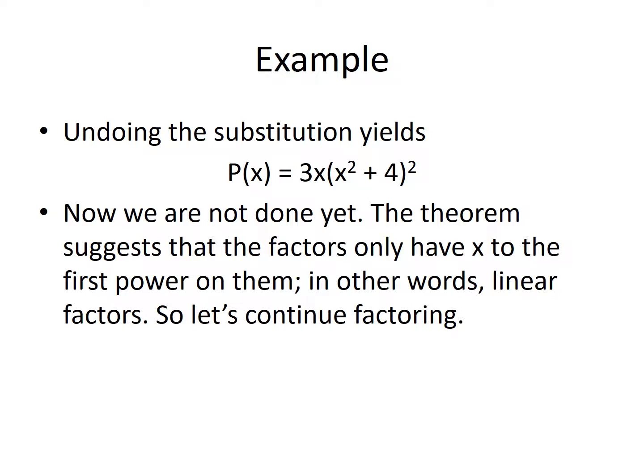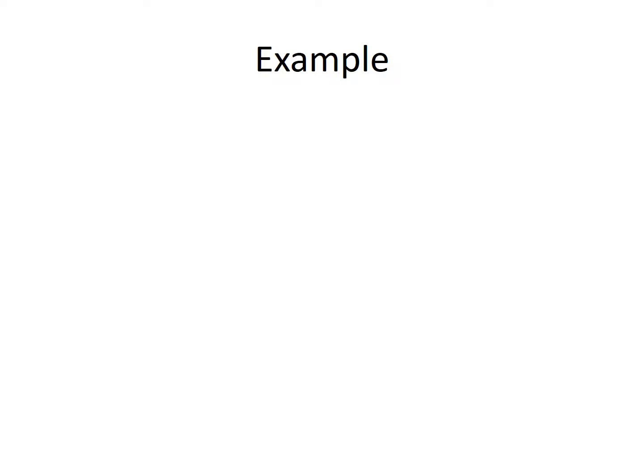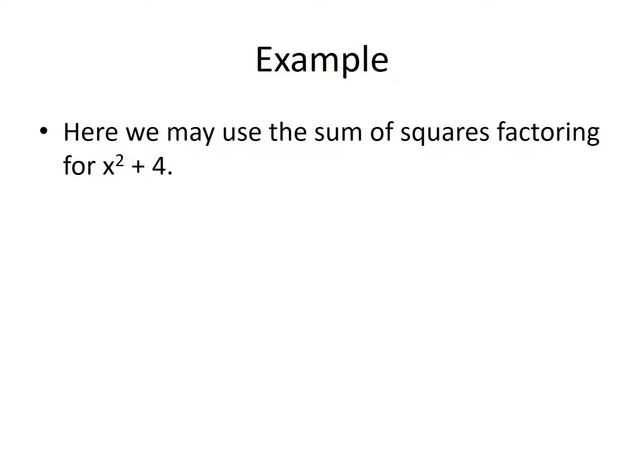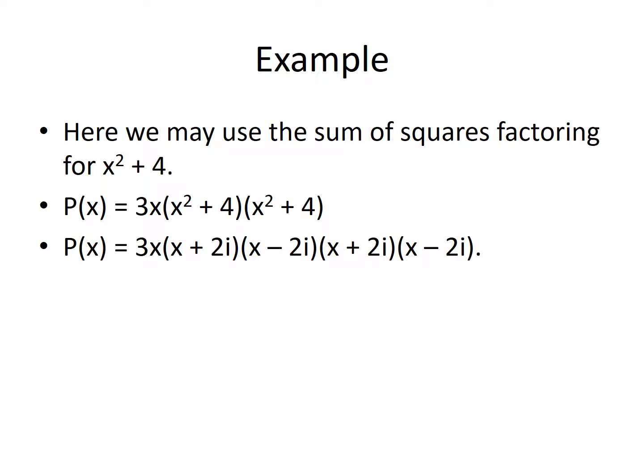But we're not done yet. The theorem requires linear factors — only x to the first power. We can keep going. Here we may use the sum of squares factoring for x squared plus 4. Since x squared plus 4 appears with the second power, we have 3x times x squared plus 4 times x squared plus 4. By sum of squares factorization, each x squared plus 4 factors into x plus 2i times x minus 2i. So here we have our factorization with all linear factors.